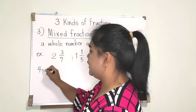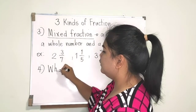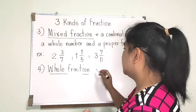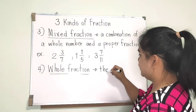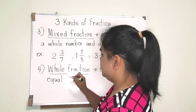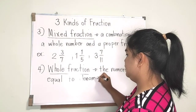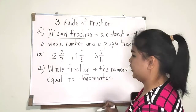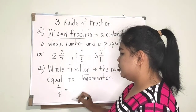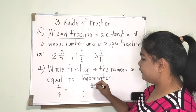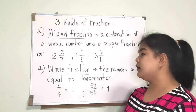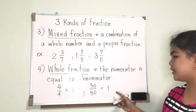Number four is a special fraction called whole fraction. In a whole fraction, the numerator and the denominator are equal. It looks like an improper fraction. For example, four-fourths equals one, and fifty over fifty also equals one.